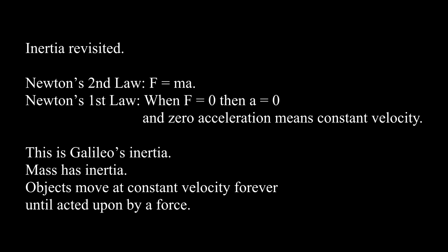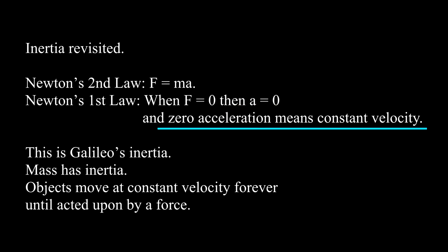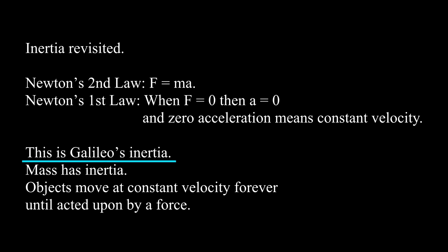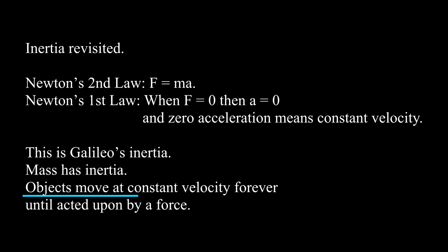Inertia Revisited. Newton's second law, force equals mass times acceleration, has a special case: Newton's first law — when the force is zero, then the acceleration is zero. And zero acceleration means constant velocity. This is Galileo's inertia. Mass has inertia. Objects move at constant velocity forever, until acted upon by a force.